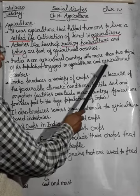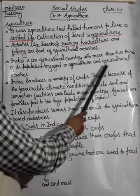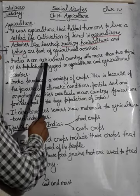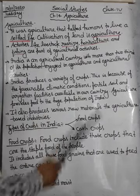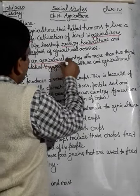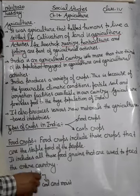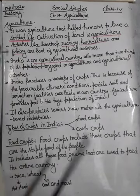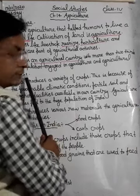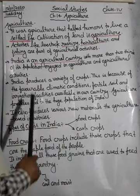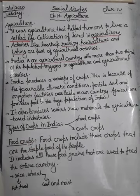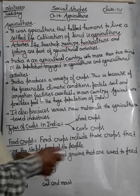India is an agricultural country with more than two-thirds of its population engaged in agriculture and agricultural activities. India produces a variety of crops — many different types of crops are produced here.